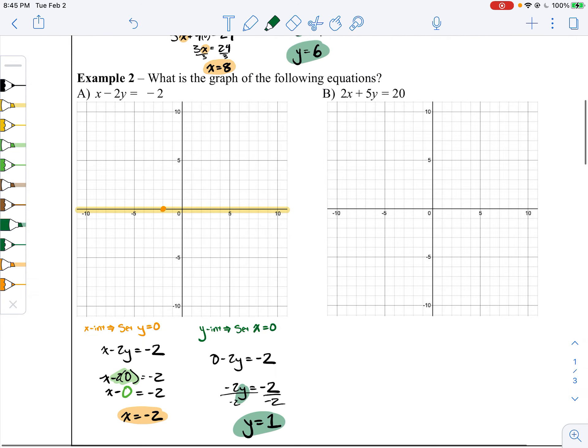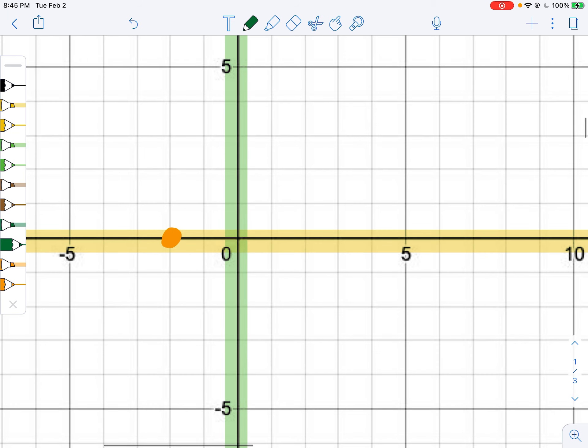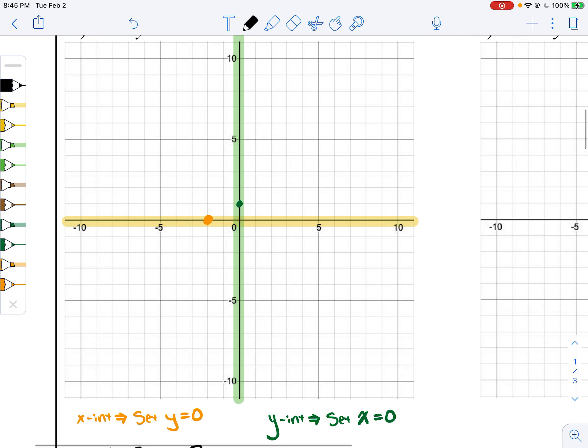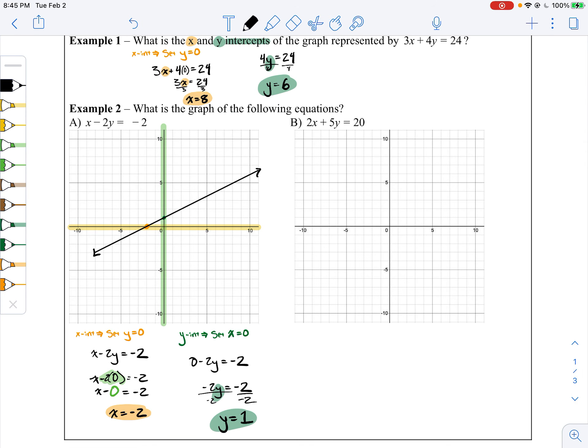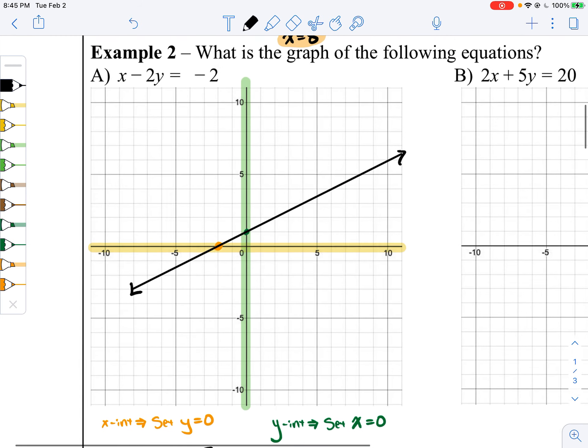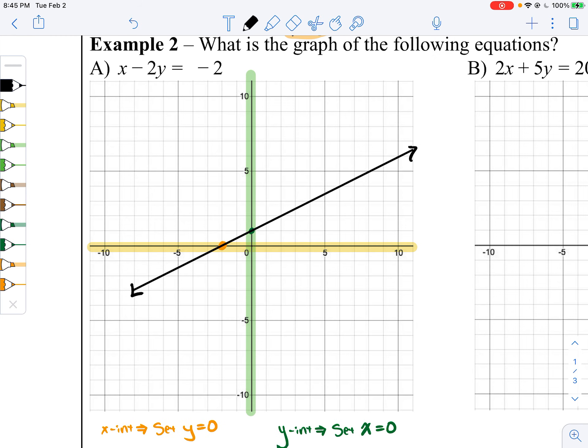And now we have two dots. Since we have two dots, we can take a line that goes through them all. There, that's how you graph an equation in standard form. Find the intercepts and connect them. Got it?